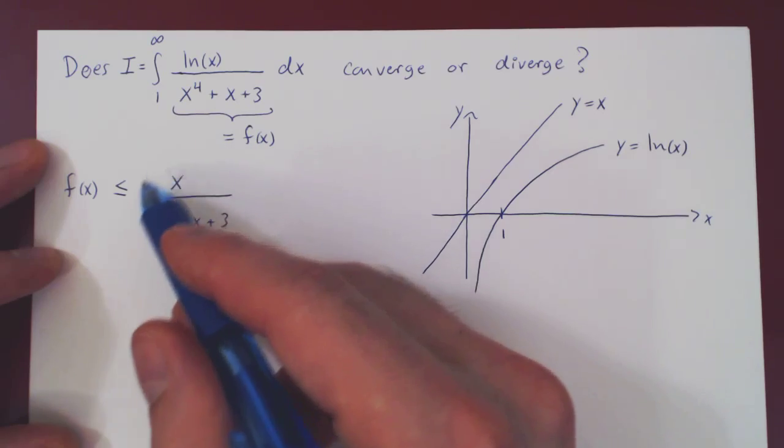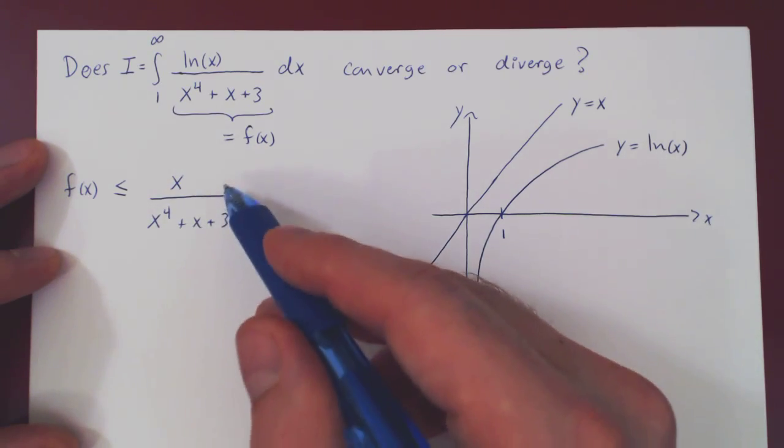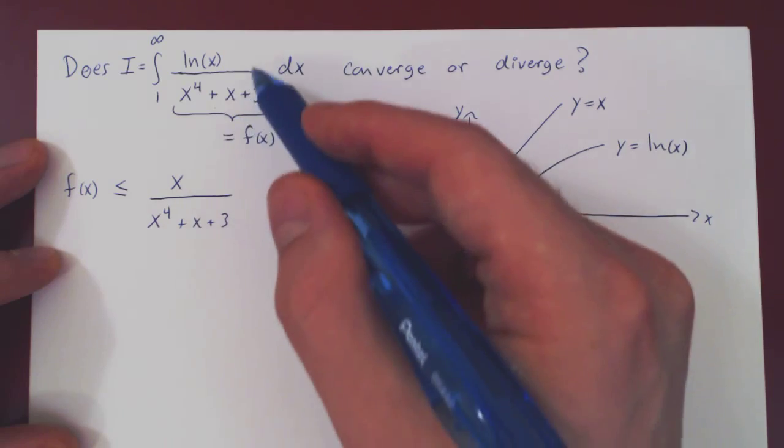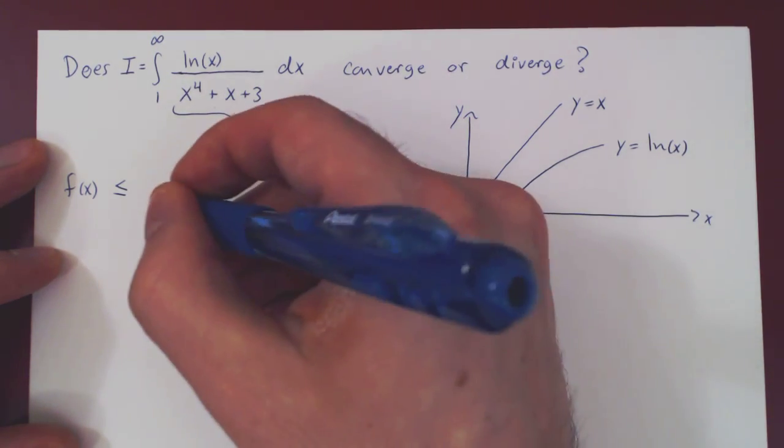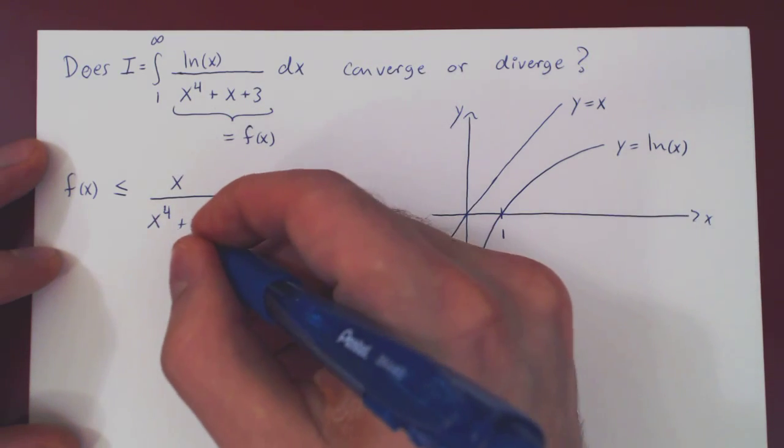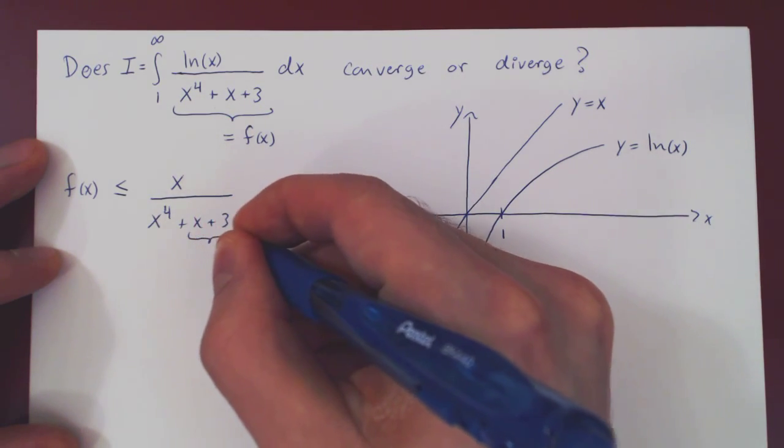Then, this is still rather complicated, it's a rational function, it is simpler than the original function, but it is not a simple rational function. Well, look at these two terms, x plus 3.